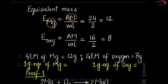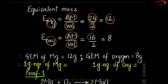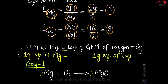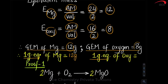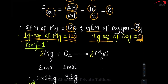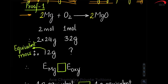Example: magnesium is an element, so equivalent mass = atomic mass ÷ valency = 24 ÷ 2 = 12. Oxygen: 16 ÷ 2 = 8. So 1 gram equivalent of magnesium is 12 grams, and 1 gram equivalent of oxygen is 8 grams — equivalent mass expressed in grams.